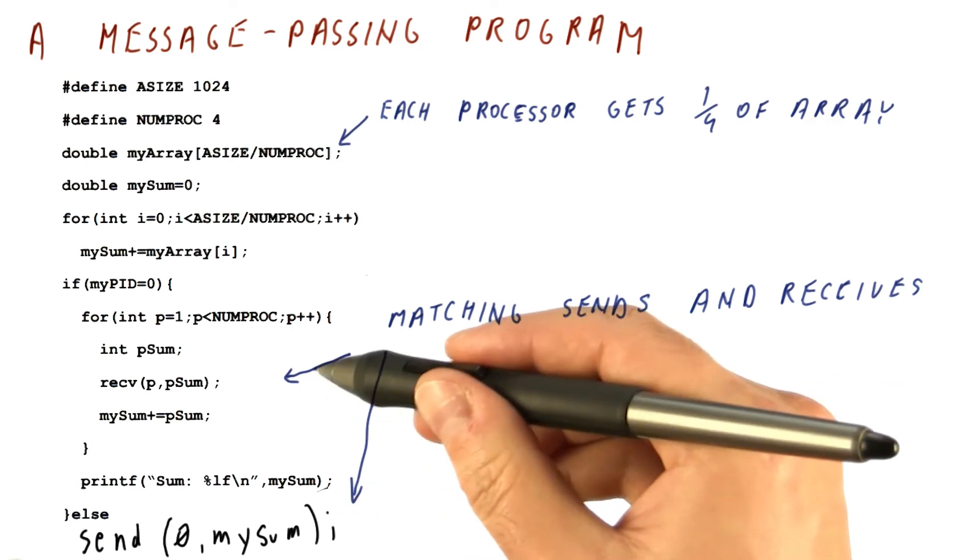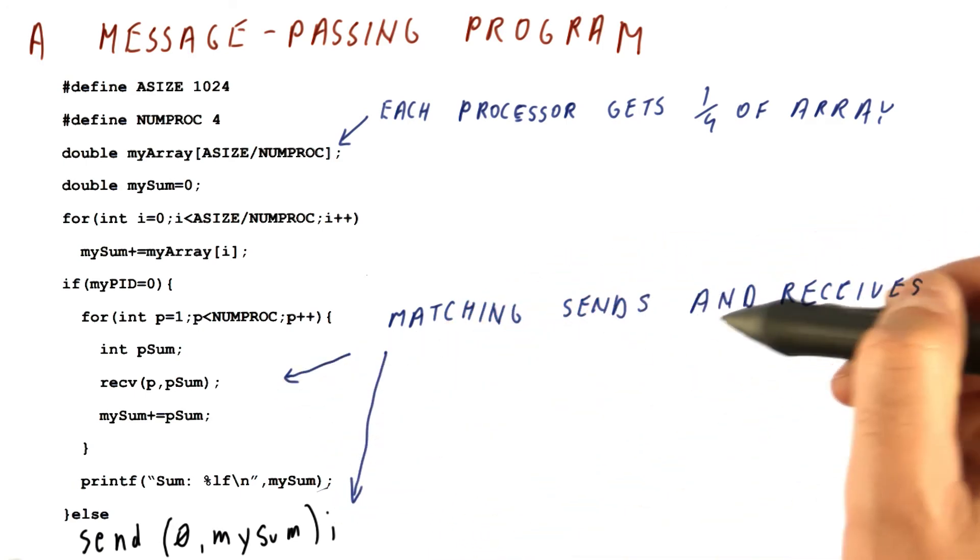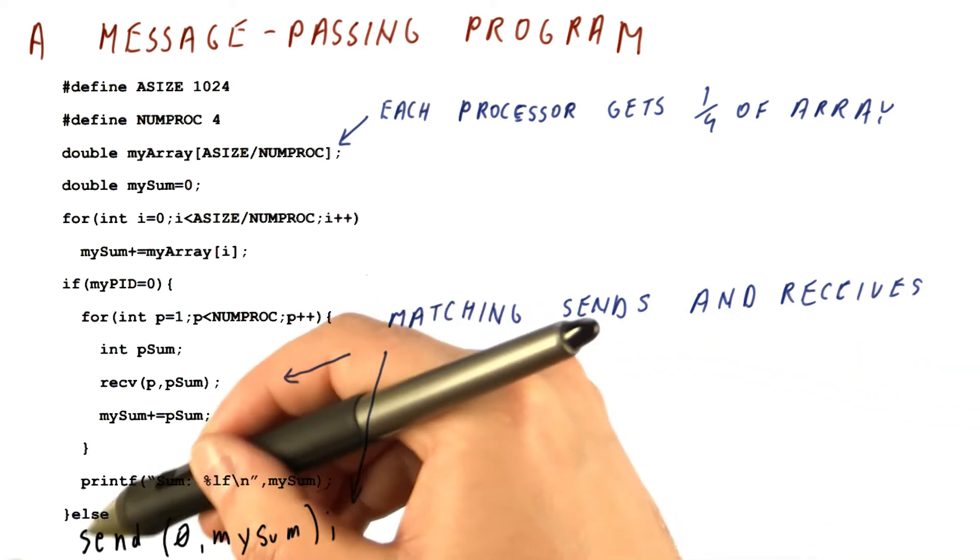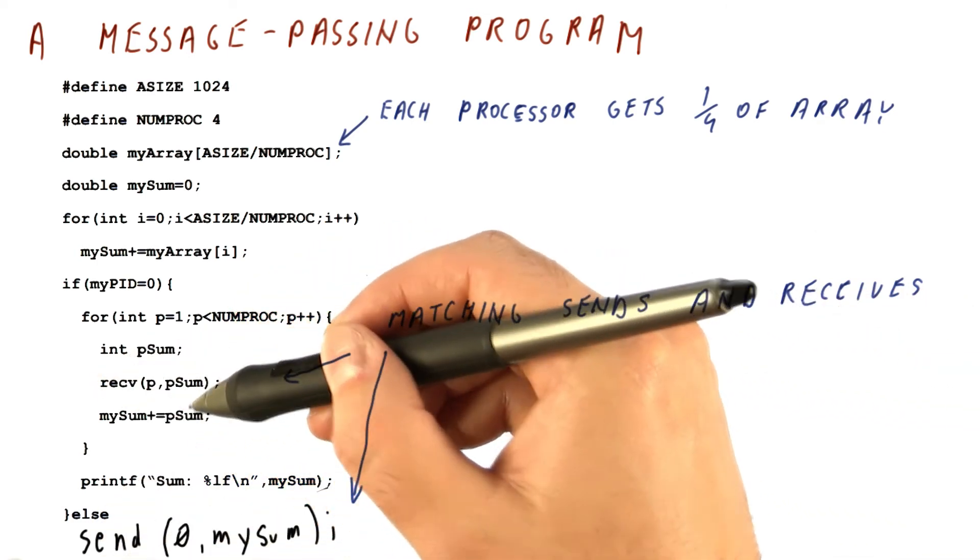We need to explicitly also in the program figure out how to match the sends and receives because if we send something and it's not received, it's going to be a problem.